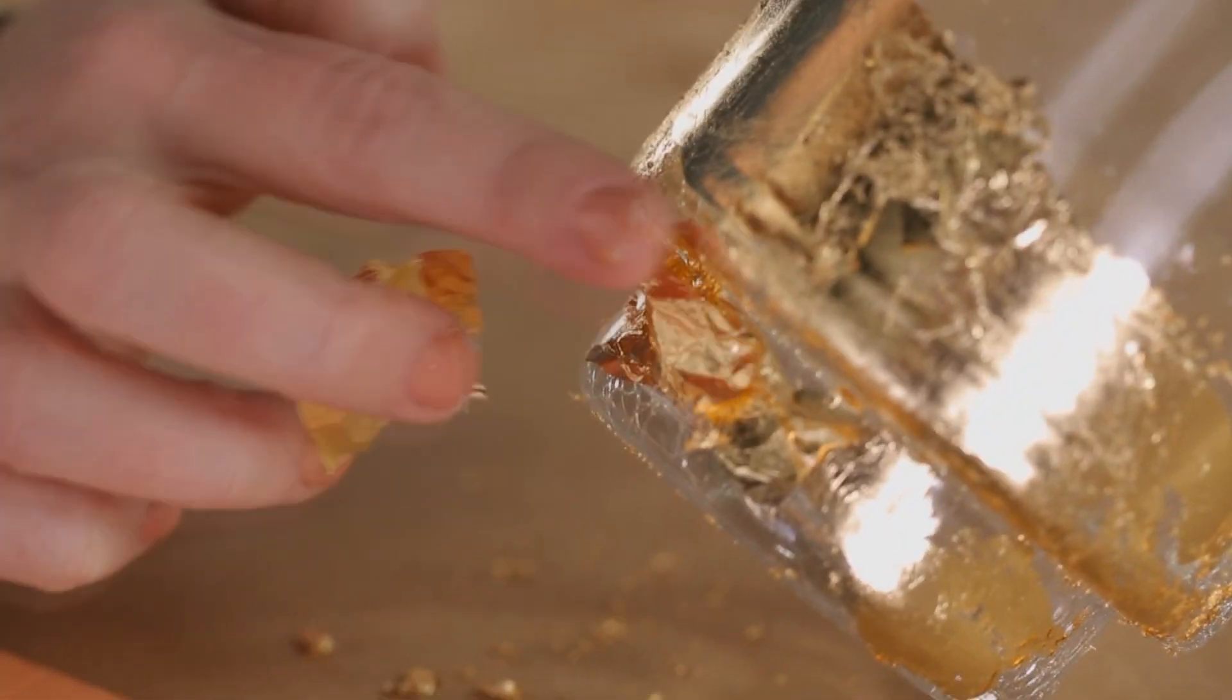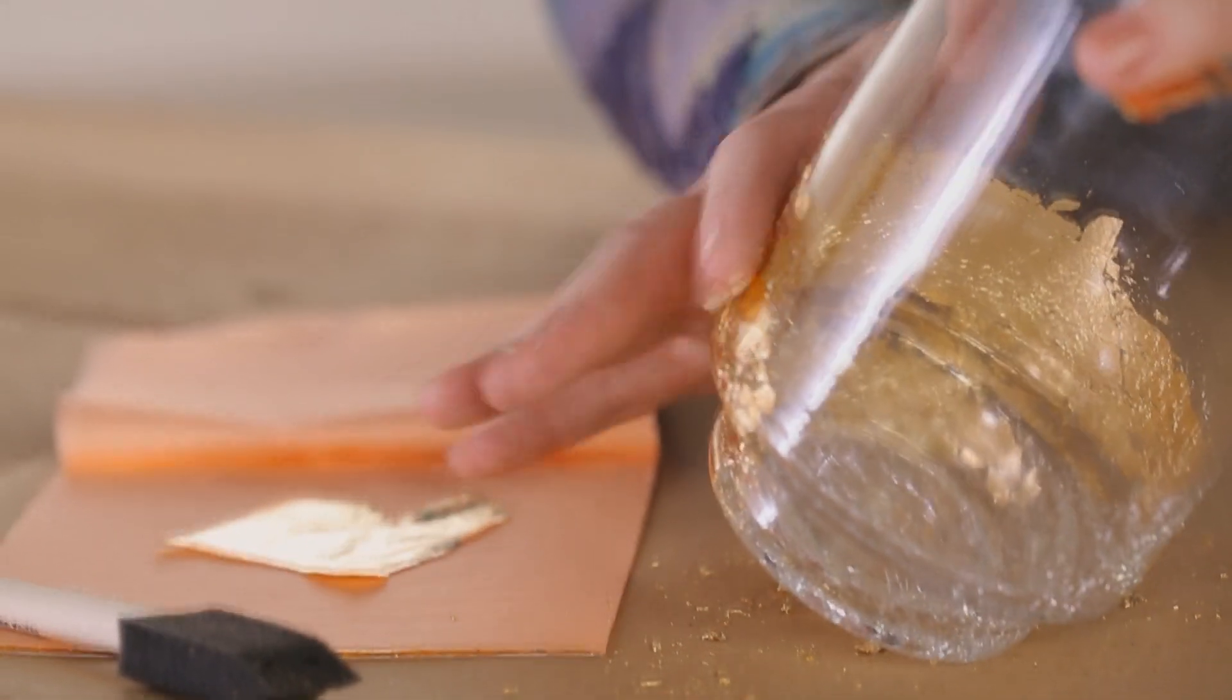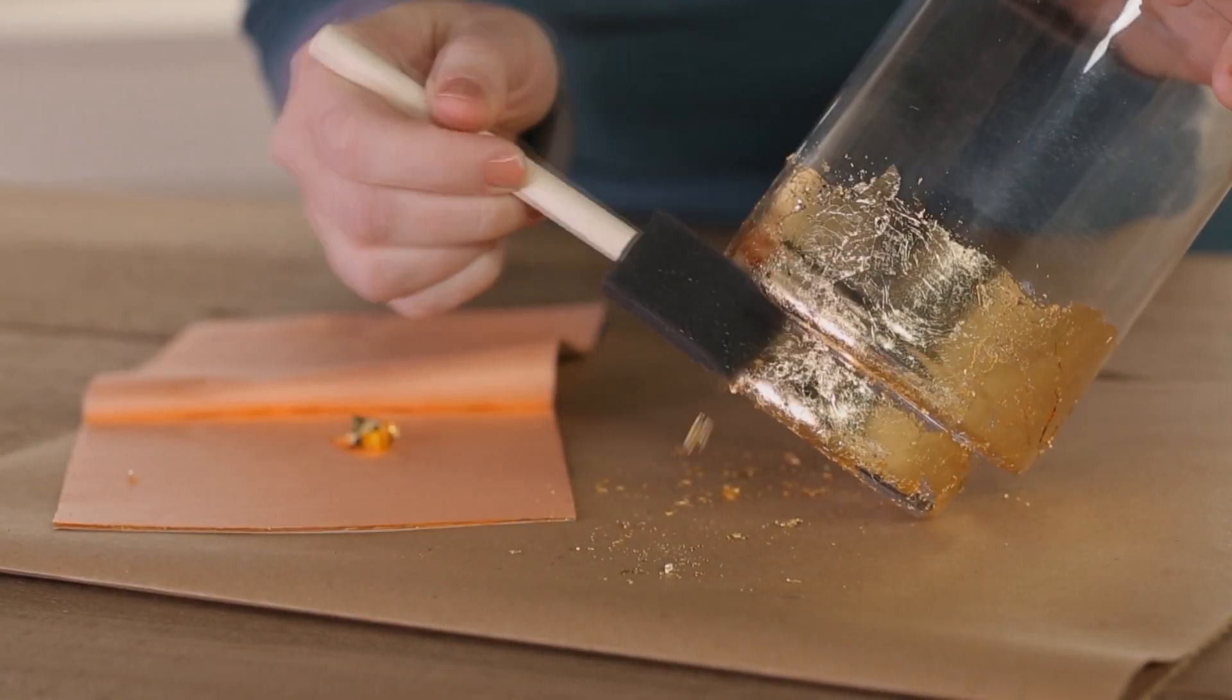Continue these steps until the surface is covered, overlapping sheets if necessary. When the entire surface is covered in gold leaf, use a foam brush to remove excess flakes.